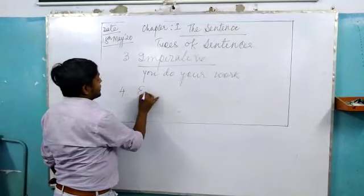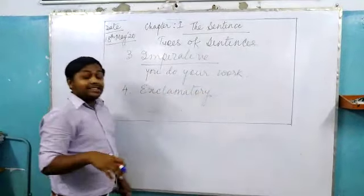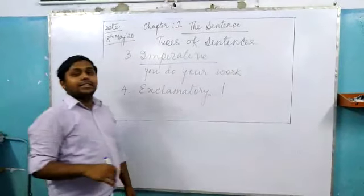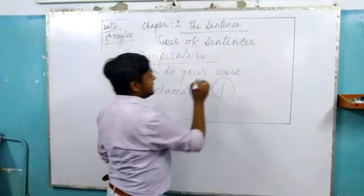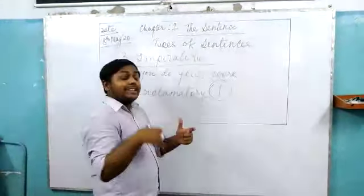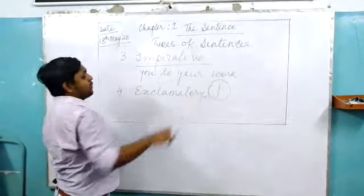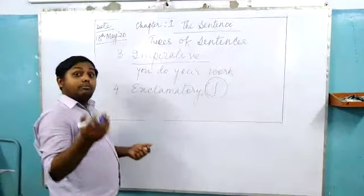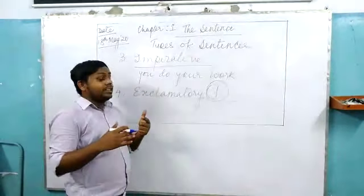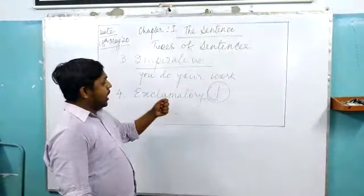Next kind is exclamatory sentences. Exclamatory sentences are used to show a certain surprise or any expression. We use an exclamation mark in these sentences. We use this punctuation mark to show a certain feeling — surprise, happiness, sorrow, anything. For example, 'Wow, how beautiful the flower is!' — that is a surprise. Or 'Oops, I got hurt!' — that is showing some sorrow or sudden expression. So this is about exclamatory sentences.